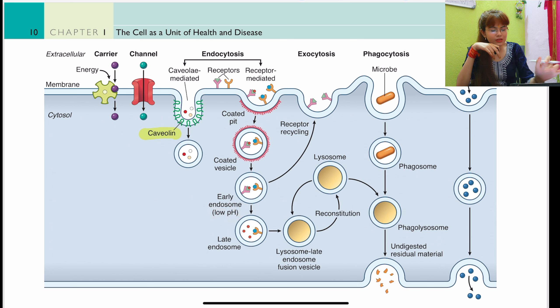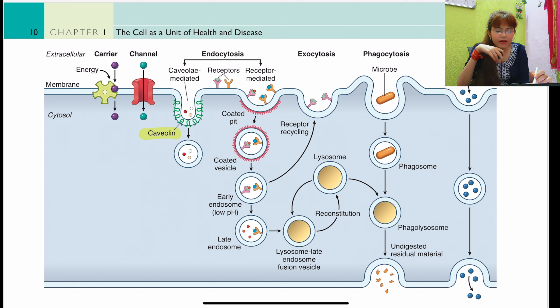Once formed, vesicles fuse with intracellular structures to form an early endosome, where the pH is low. The clathrin coating is lost at this stage. Early endosomes progress to late endosomes and ultimately fuse with lysosomes. In the acidic environment of the endosomes, LDL and transferrin receptors release their cargo, which is then transported to its destination — completing endocytosis.